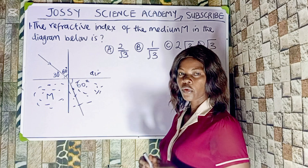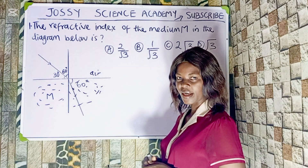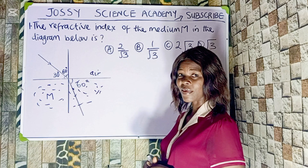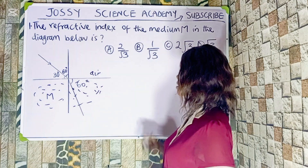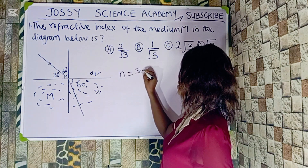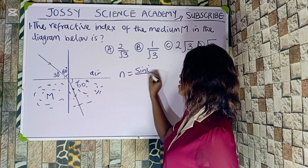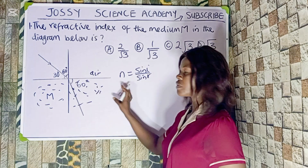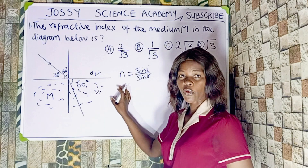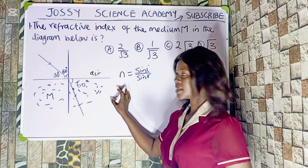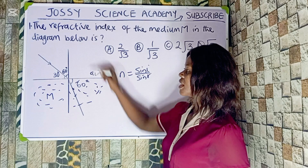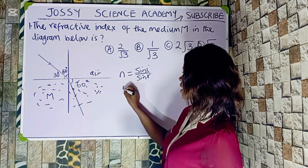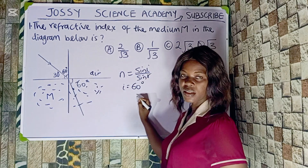For us to solve this question, we must not forget that the refractive index of glass or any medium is equal to sin I over sin R. That is, M is equal to sin of angle of incidence over sin of angle of refraction. This refraction only takes place when light travels from one medium to another of different densities. From what we have, the angle of incidence I is given as 60 degrees.